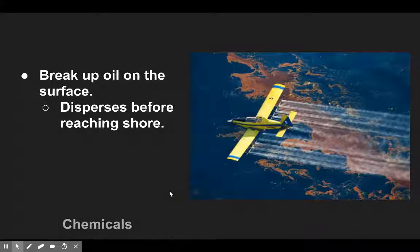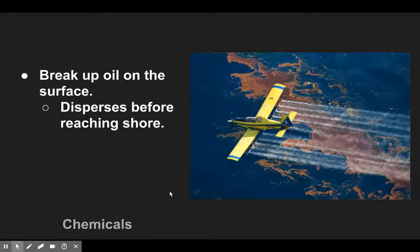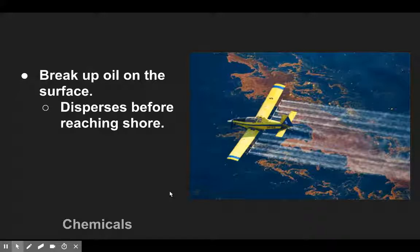A second approach is to apply chemicals to oil floating on the surface. These dispersants help break up and disperse the oil before it hits the shoreline and causes even more damage to coastal ecosystems. Although dispersants can be effective, they can also be toxic to marine life. These chemicals break up the oil but also have effects on marine life. Current research is examining ways to make chemical dispersants more environmentally friendly.